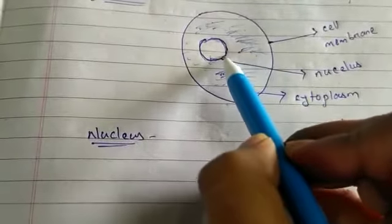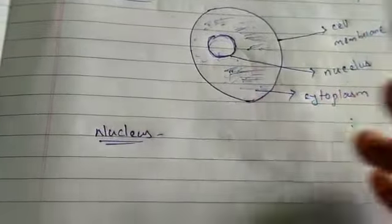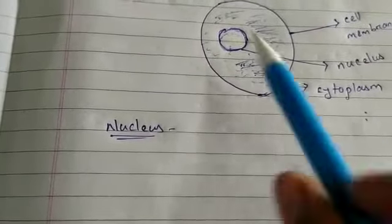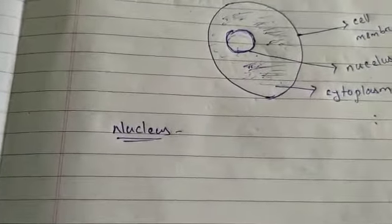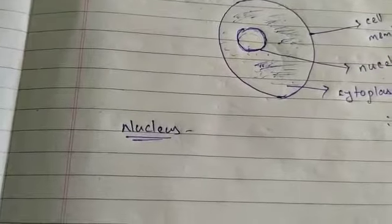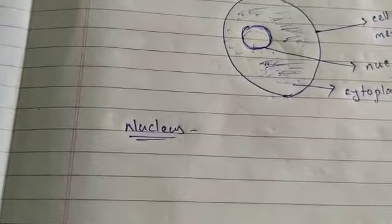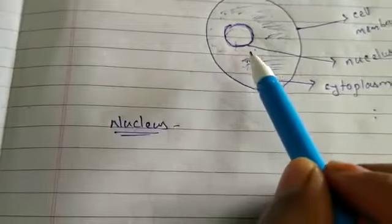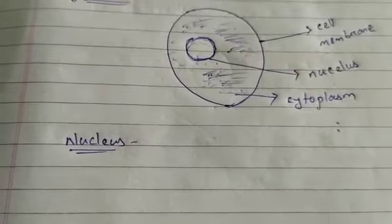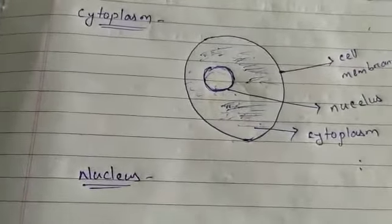The nucleus has a membrane called the nuclear membrane which separates the nucleus from the cytoplasm. This membrane is porous, meaning it allows regular movement of substances or materials between the cytoplasm and the nucleus according to requirement.